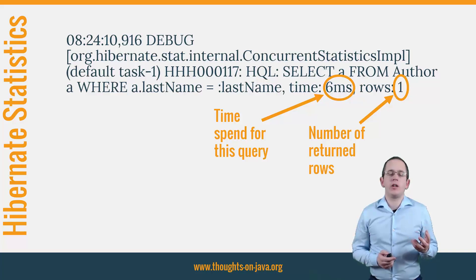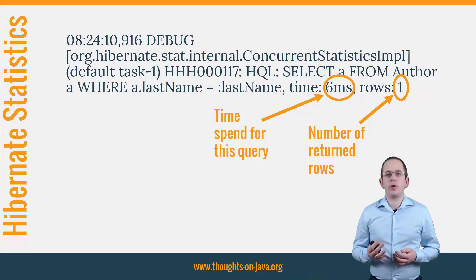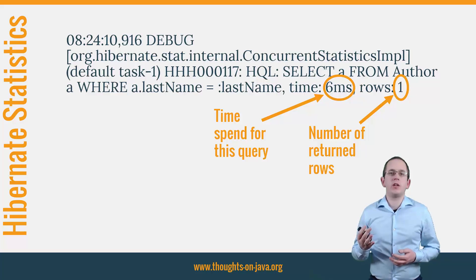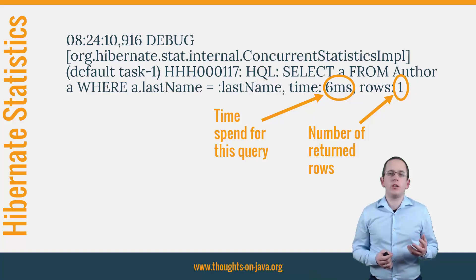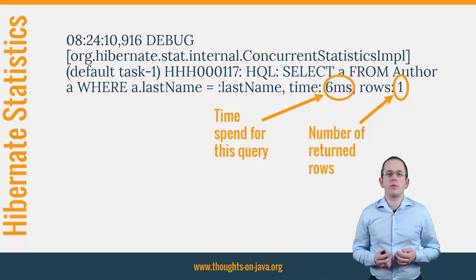Both values can help you to identify performance issues. The benefit of the first one is quite obvious — you can see how long the execution of the query took and you can use it to identify slow database queries. I will get into more details about how you can improve the performance of database queries in the second part of this course.